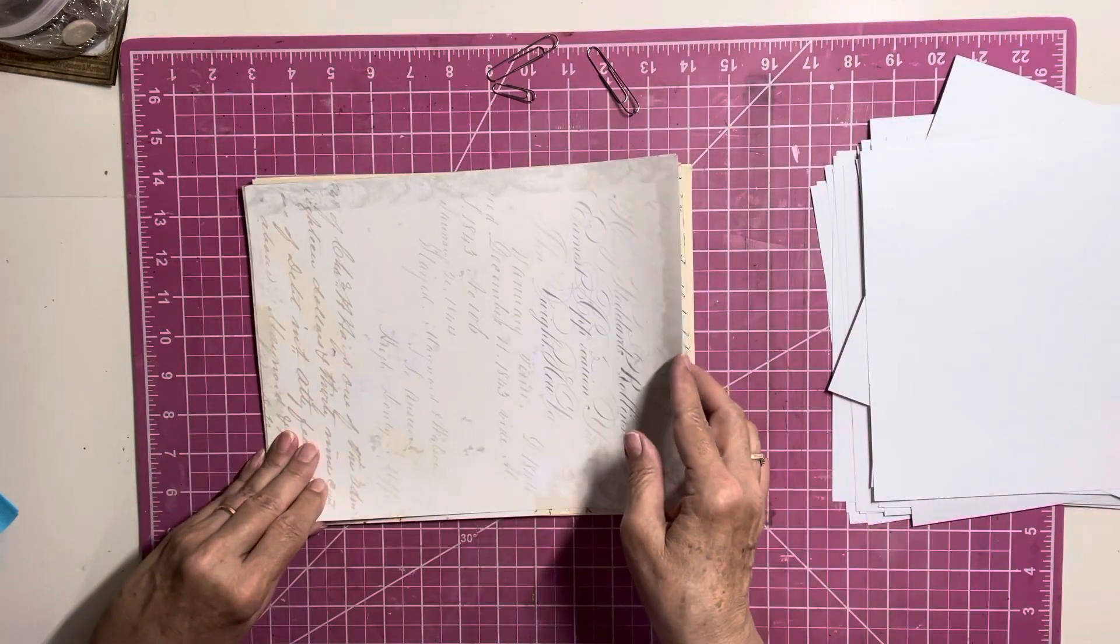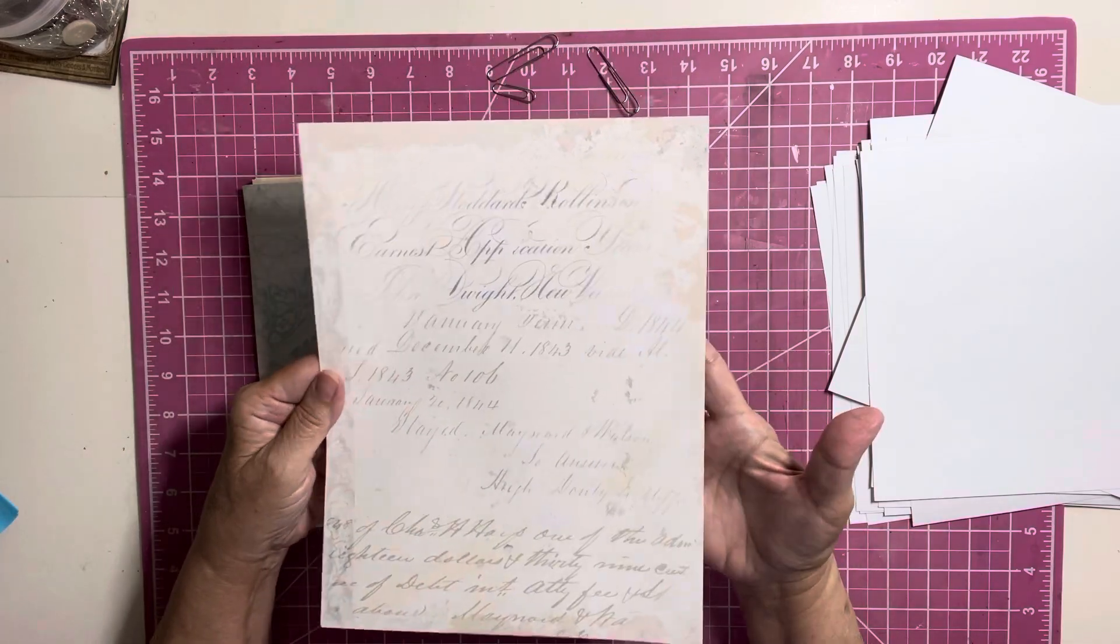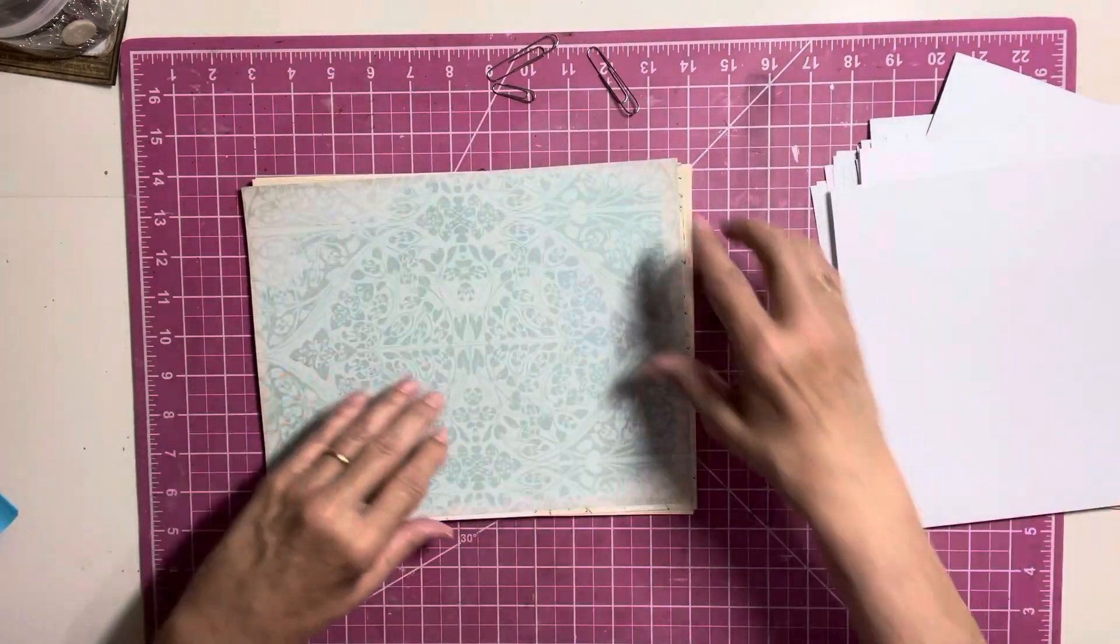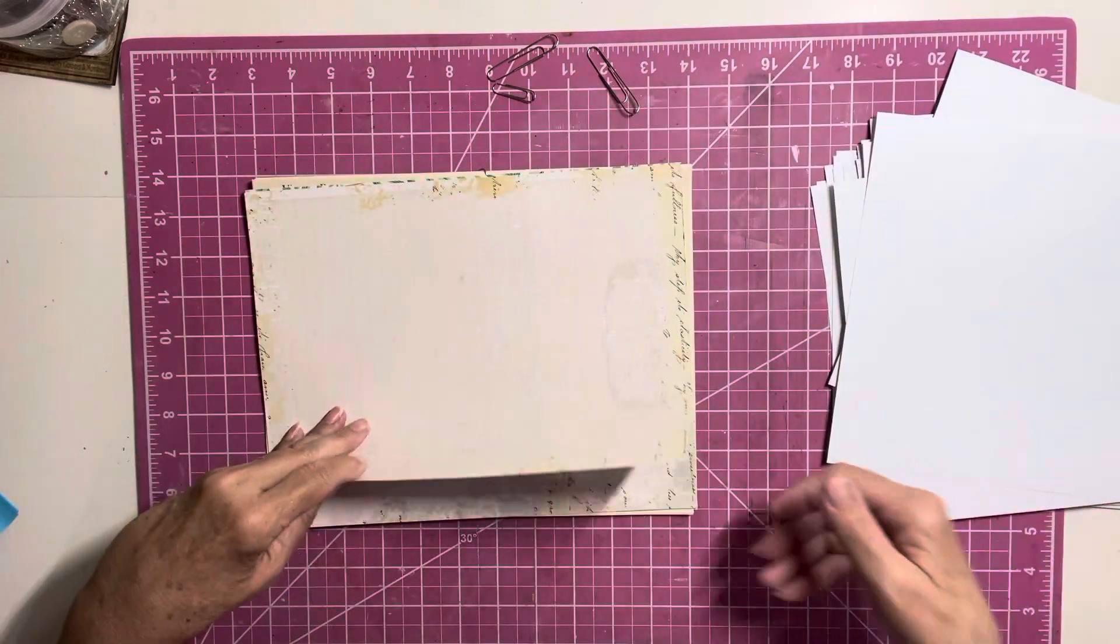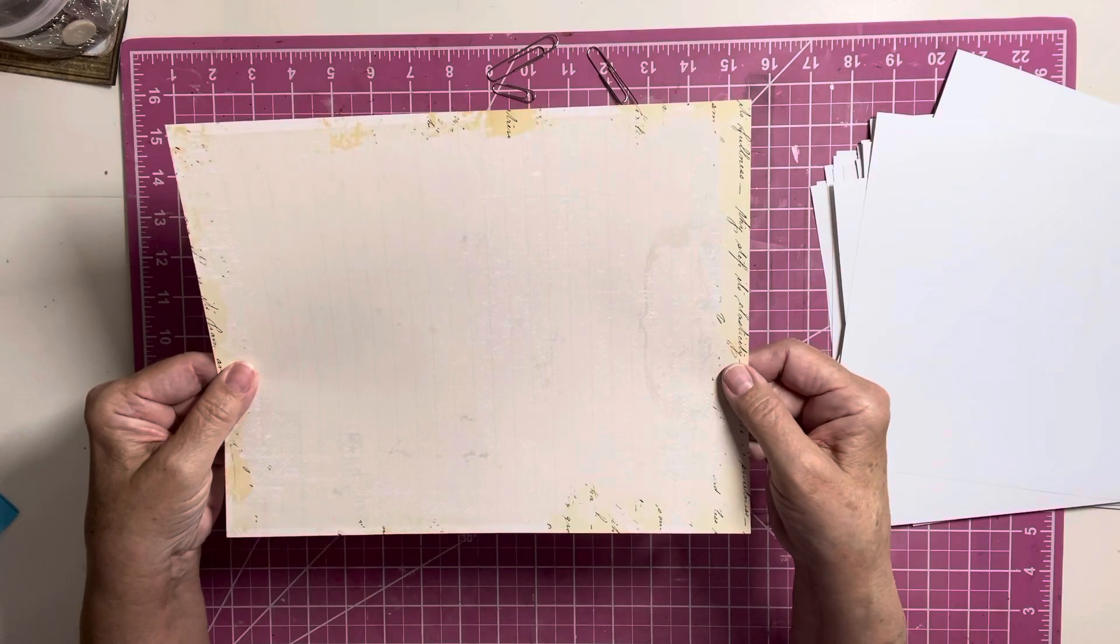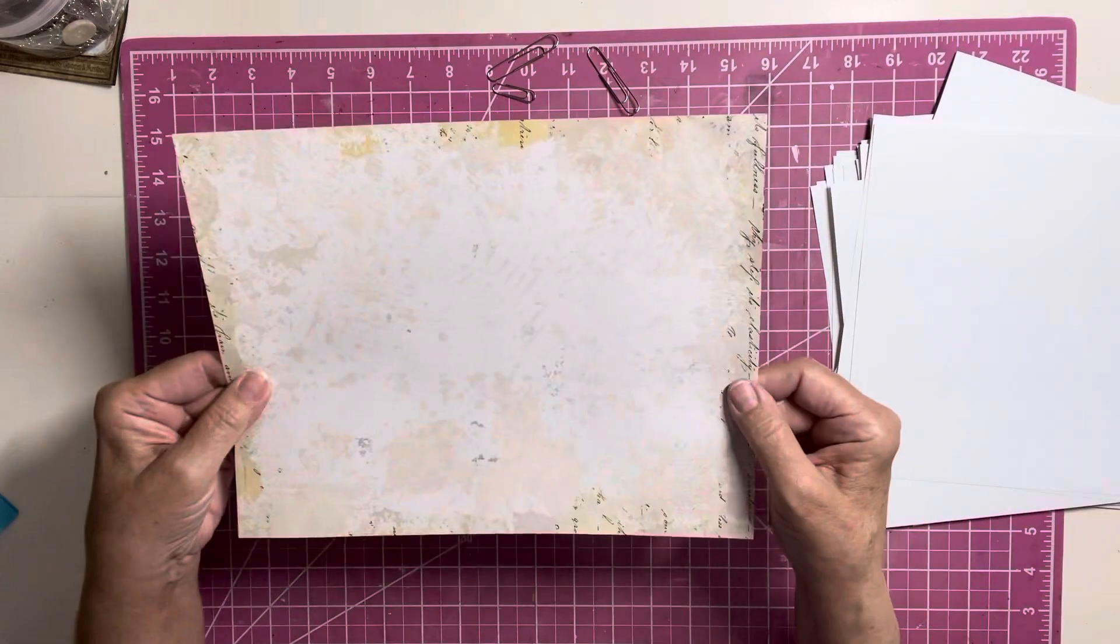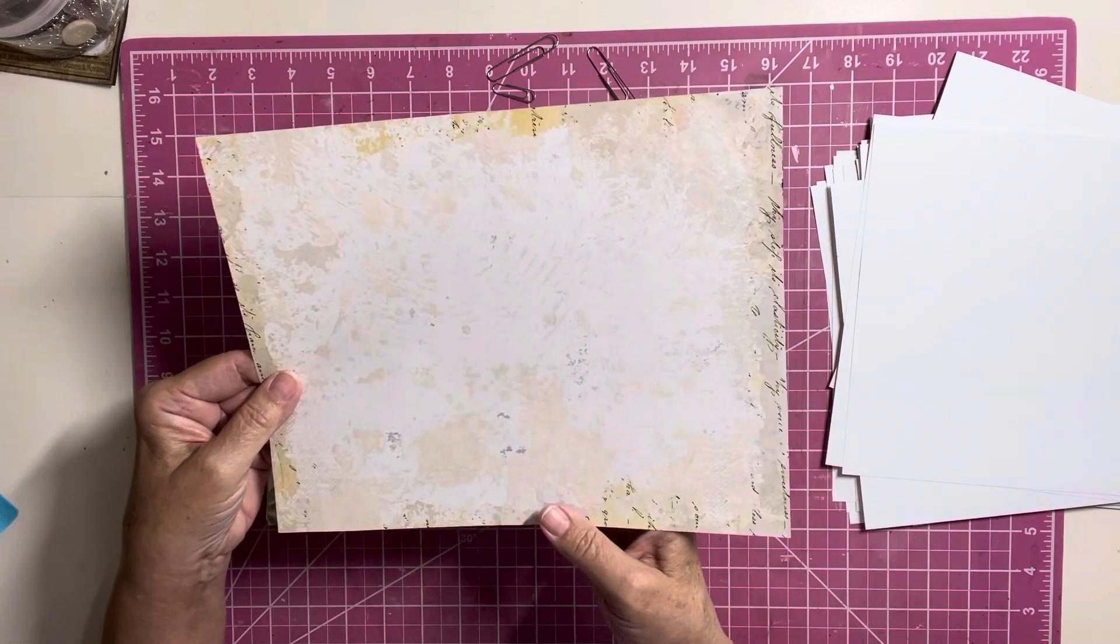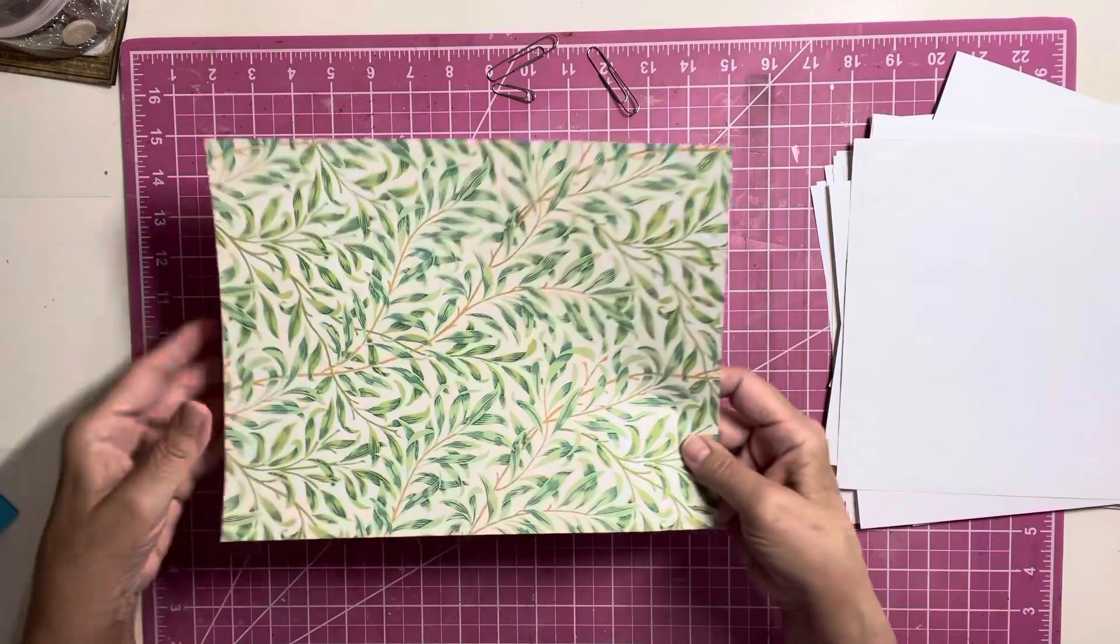And then we have what I would probably use as some background pages. So we have this one. And this one. This one. So I will be choosing some of these for the background of my signatures. This one. I like this one too. It's very pretty.